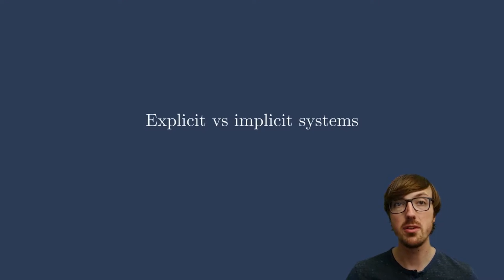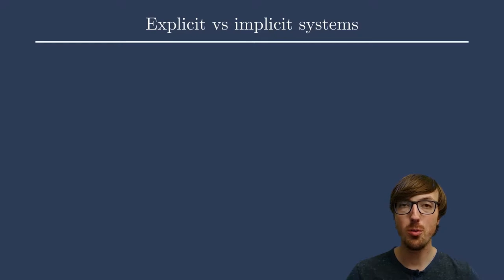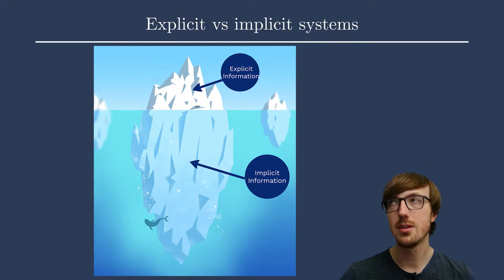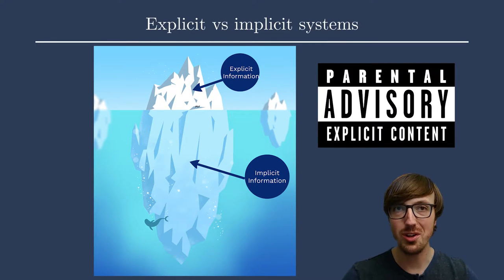Today we're talking about explicit and implicit systems. So the words explicit and implicit have specific meanings in the English language depending on how you're using them. In searching for how to introduce this concept for this lecture, I found this visualization of an iceberg. I was thinking about the explicit language warnings on CDs and other music.